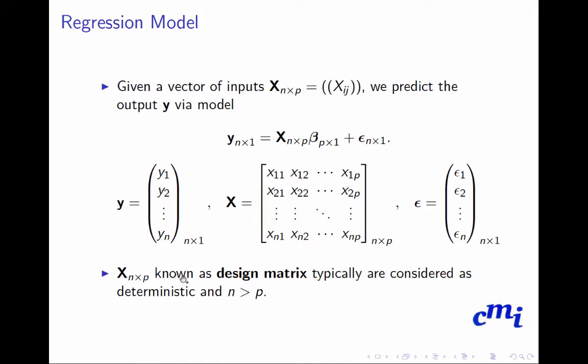X of order n×p, also known as the design matrix or feature matrix, is typically considered deterministic, and most of the time n is greater than p. Except there are some biomedical experiments where n could be less than p — those cases we will talk about later in the course.